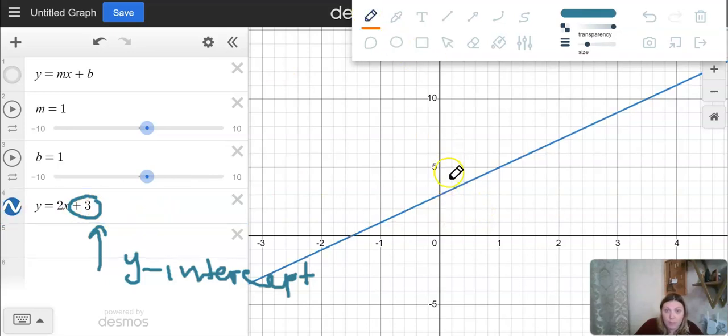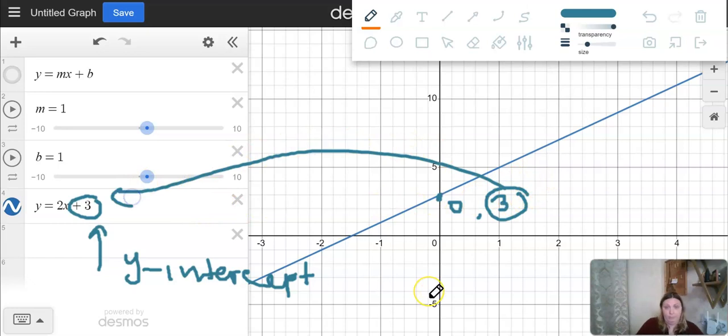So you may notice that this three over here is the same as this three over here in the equation. It's because it is the same. This point zero three, this three is right here in this equation. That's the three.